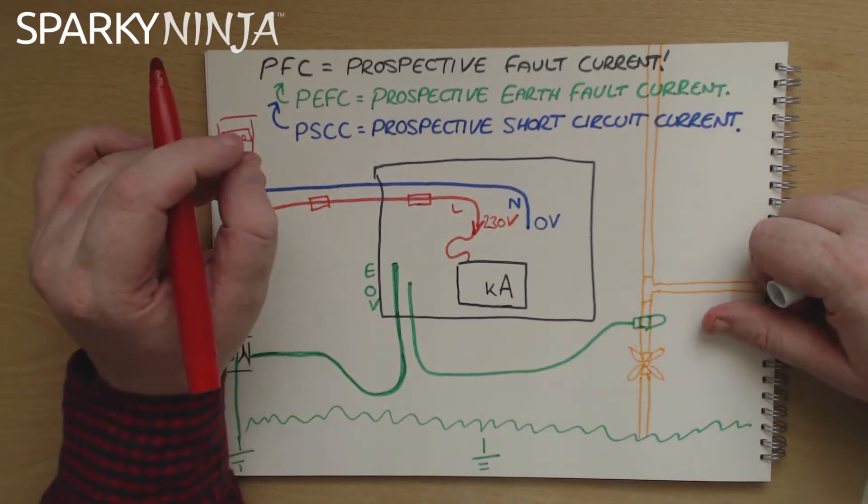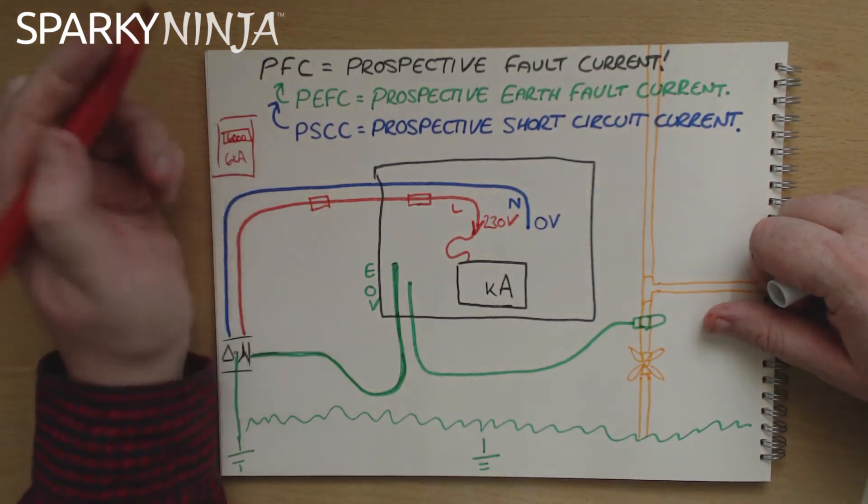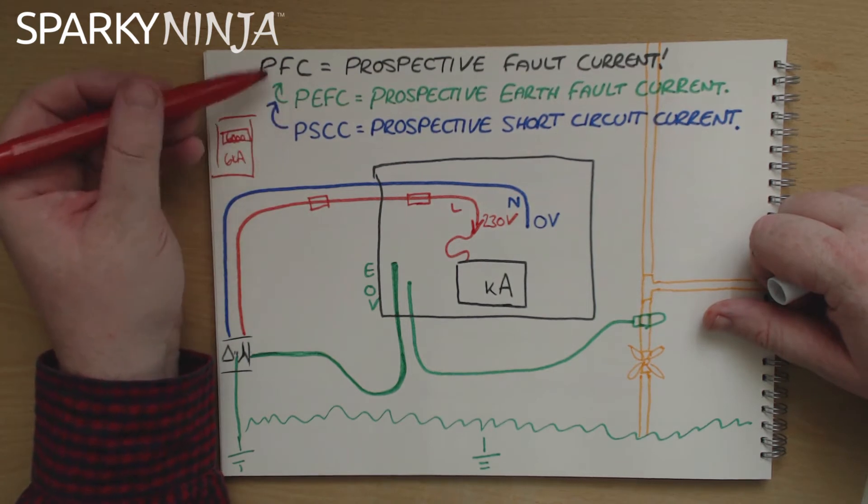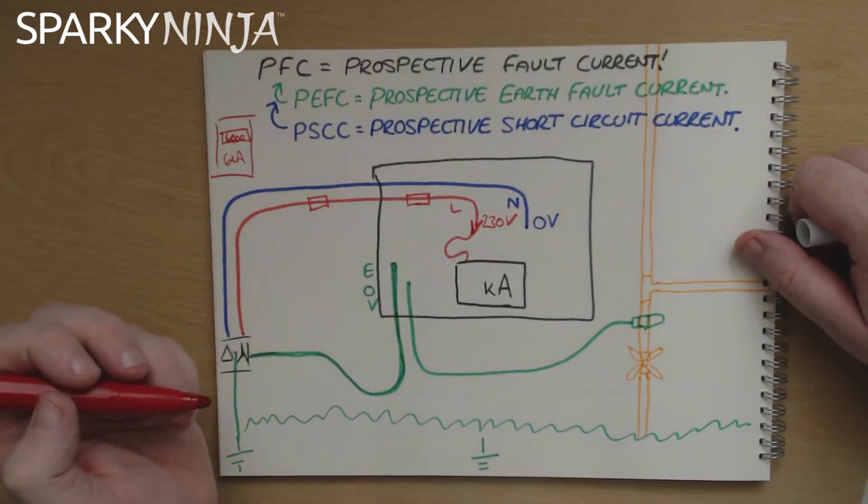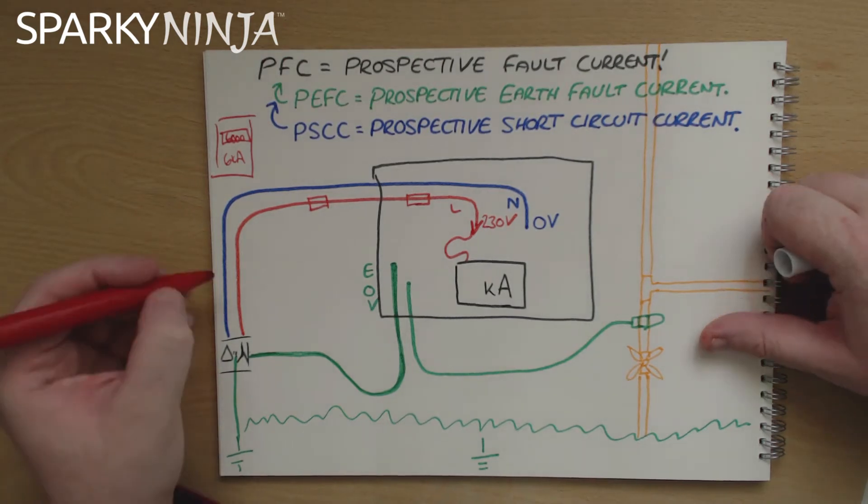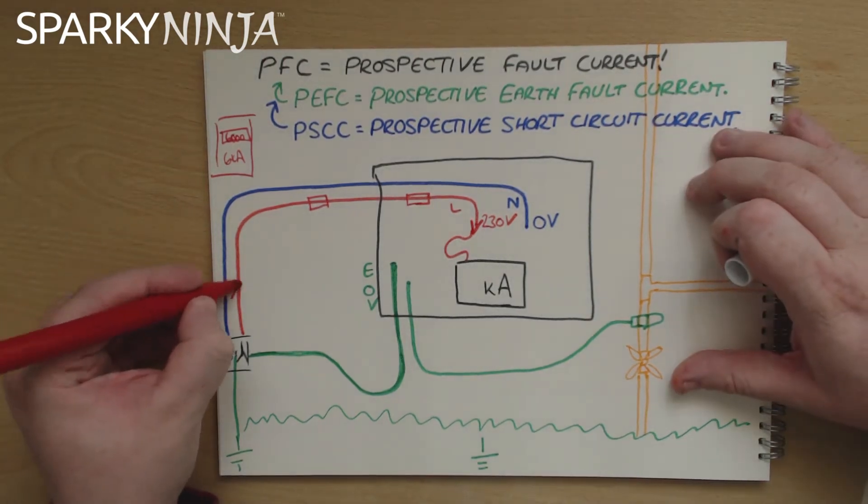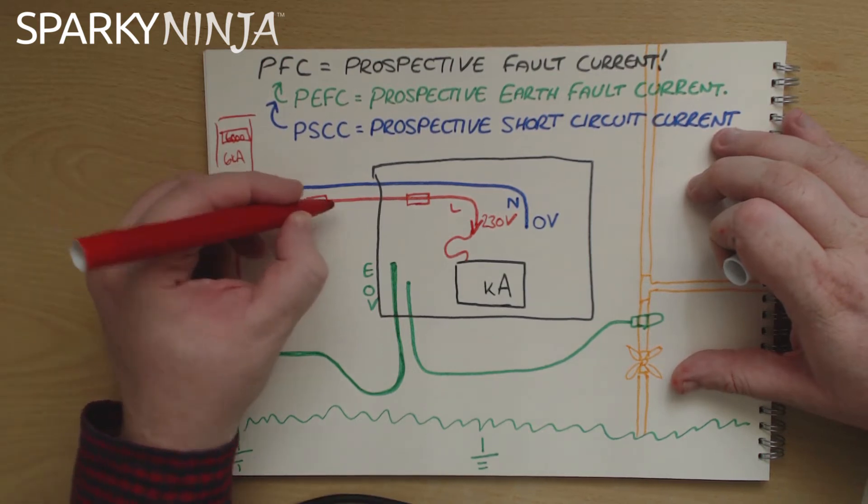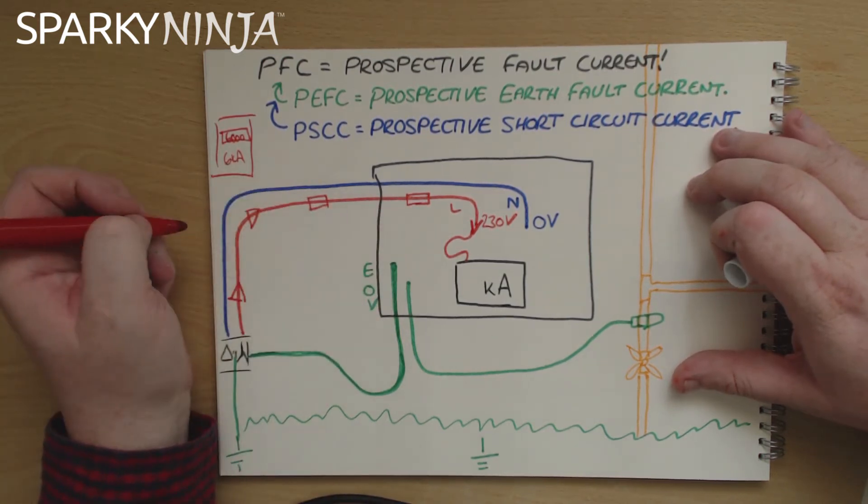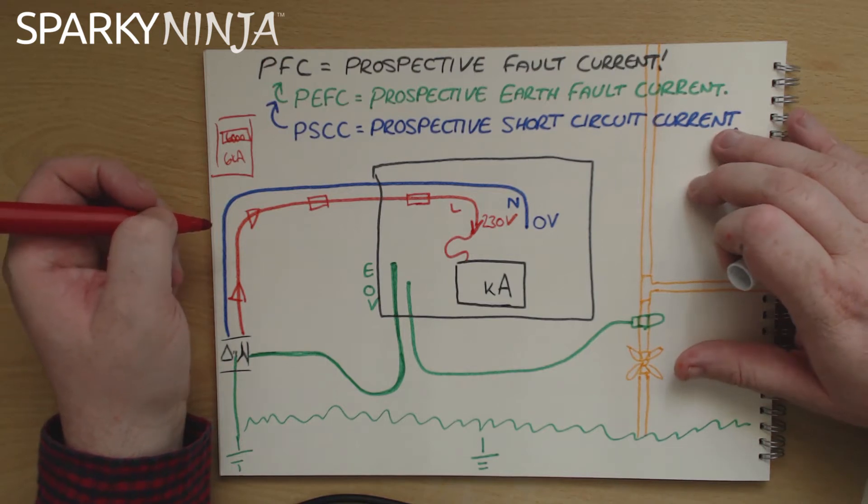There's a bit more to it than that but this is just to determine the difference between these tests right now. So I need to calculate the potential current or measure the potential current that can flow back up the line conductor towards these devices. I need to know how much current can flow.